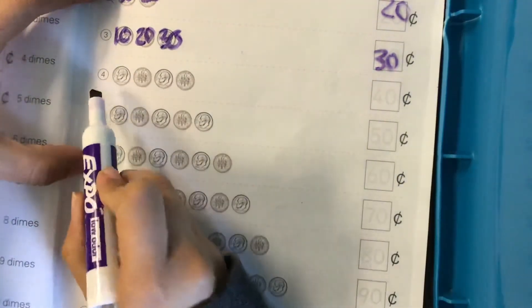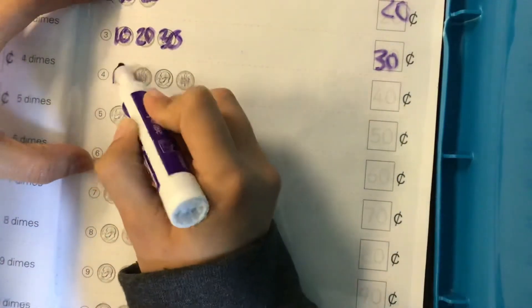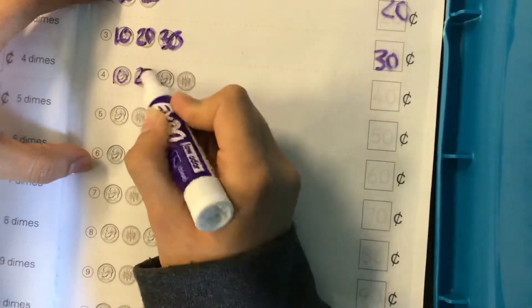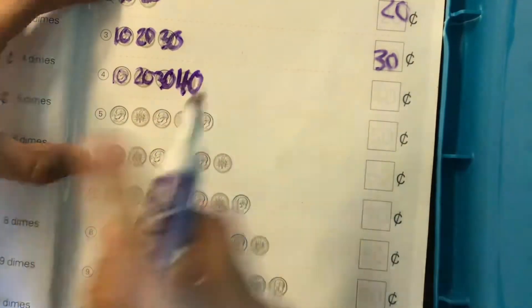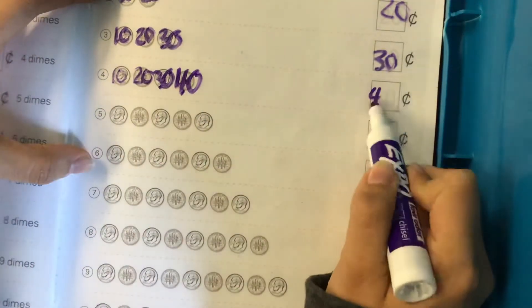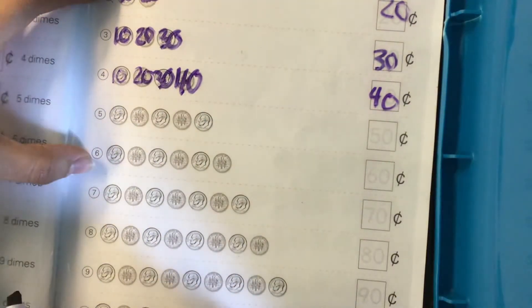Next we're gonna look at row four and we're gonna skip count. Ten, twenty, thirty, forty. So there are forty cents in row four.